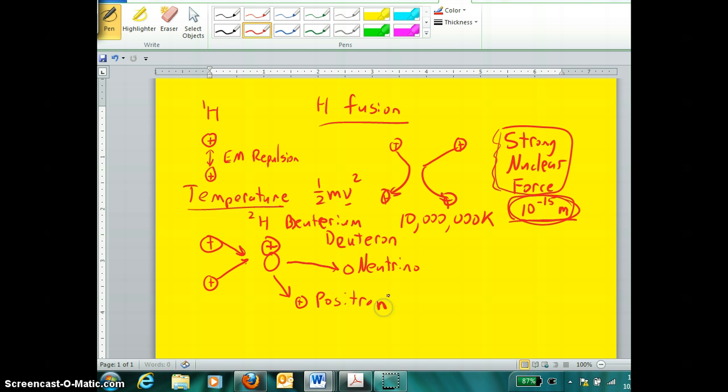A positron looks, walks, quacks, and talks just like its counterpart, an electron. It is the same size as an electron, it is the same mass as an electron, very tiny bit of mass. The only difference is they have opposing charges, and as a consequence we refer to the positron as antimatter.